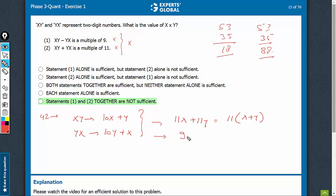And the difference is 9x minus 9y, which is a multiple of 9.